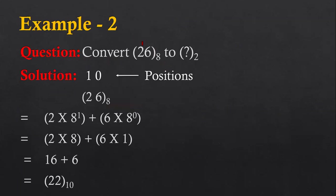Now example number 2. Here I am going to convert an octal number into binary. First I am going to convert octal to decimal, and then decimal will be converted into binary. For the octal number, I have identified the positions: position of 6 is 0, position of 2 is 1. Then I multiplied these digits: 2 is multiplied with 8¹ (here 8 is the base and 1 is the position), and 6 is multiplied with 8⁰. These multiplications are added and the result is 22, which is decimal.